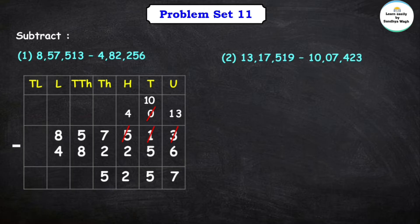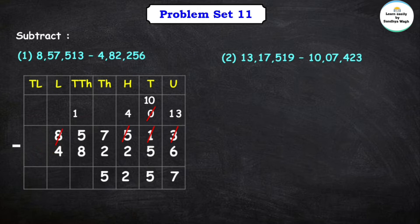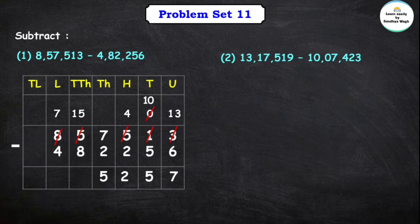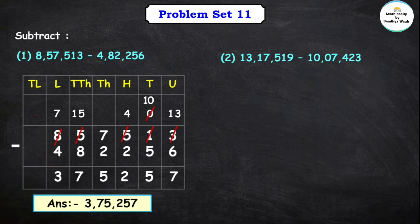Now, here in the ten-thousands place, we can't subtract 8 from 5 because 5 is the smaller number. So we borrow 1 from the lakhs place, which has 8. After borrowing, the lakhs place becomes 7, and the ten-thousands place becomes 15. We can easily subtract 8 from 15. 15 minus 8 is equal to 7. Lakhs place: 7 minus 4 is equal to 3. So our final answer is 3,75,257.